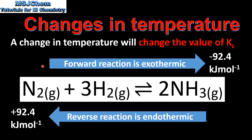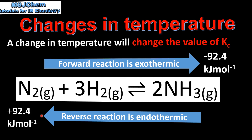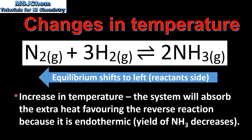For any reaction, if the forward reaction is exothermic, the reverse reaction is endothermic. Looking at the effect of increasing the temperature in the Haber process: the system will absorb the extra heat, favouring the reverse reaction because it is endothermic, and the yield of ammonia will decrease.